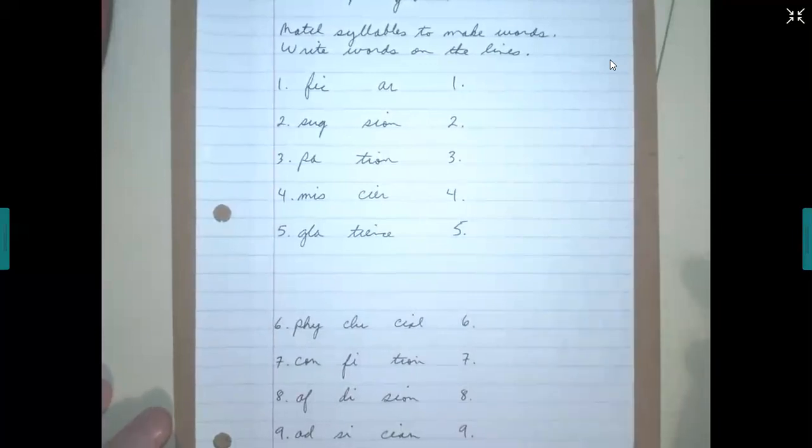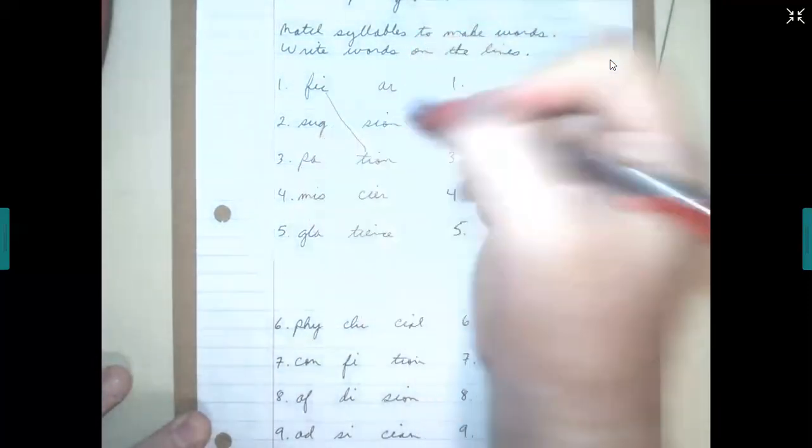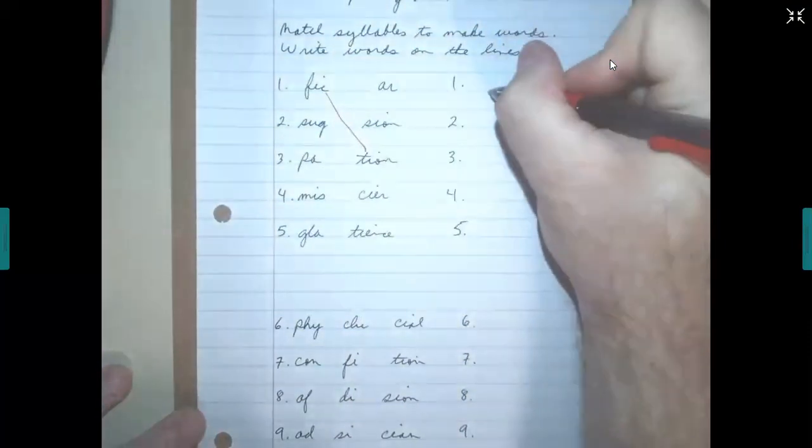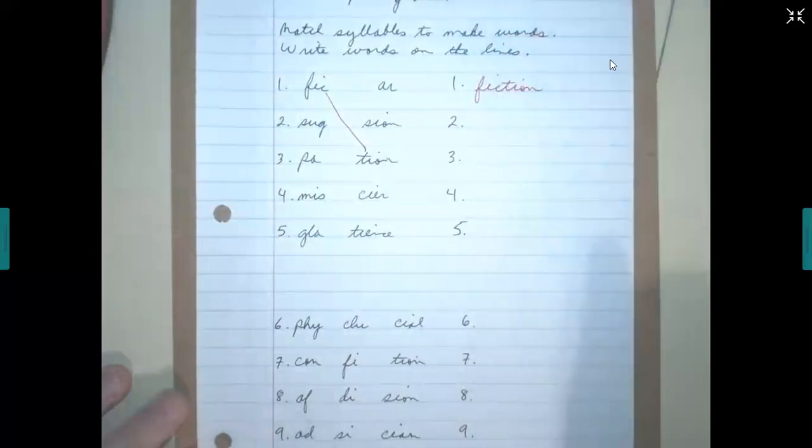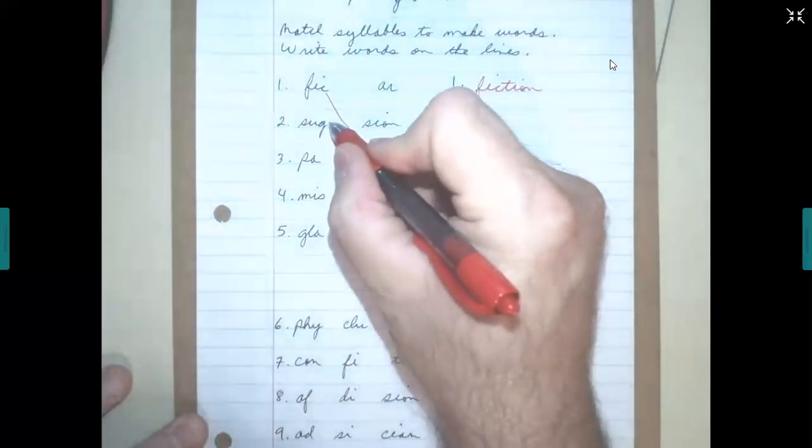We want to match the syllables to make words and then we're going to write the words that correspond to each number. The first one is F-I-C, so we have to choose a syllable that matches. We want fiction and we're going to write it here. Number two is S-H-U-G, and we're going to match that with E-R, sugar.